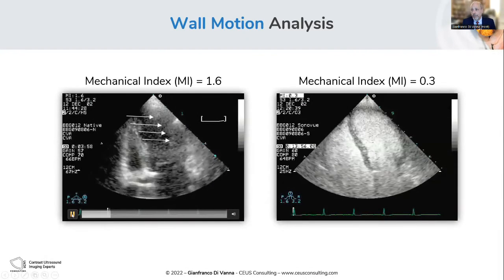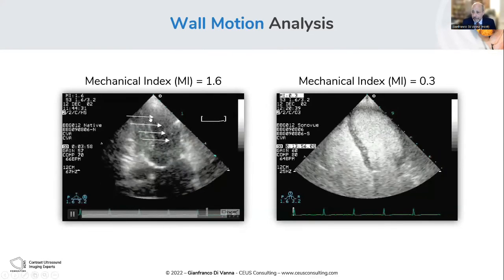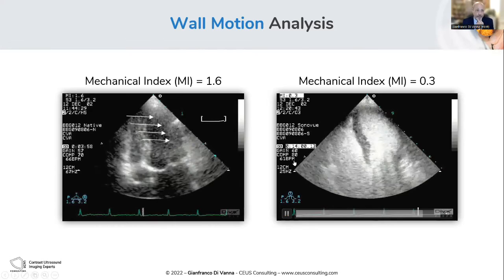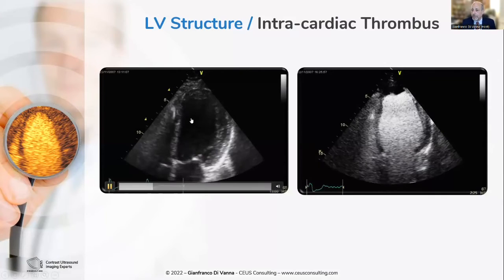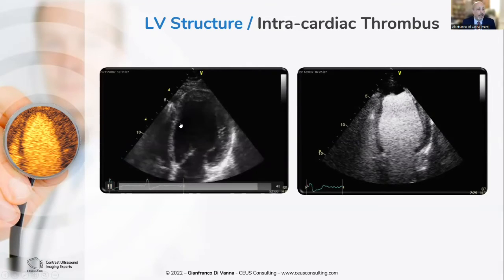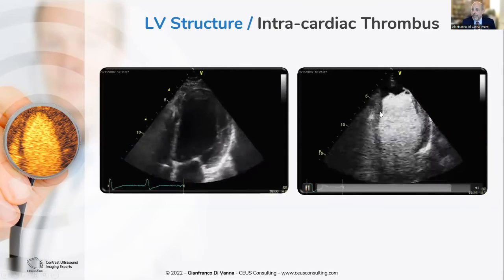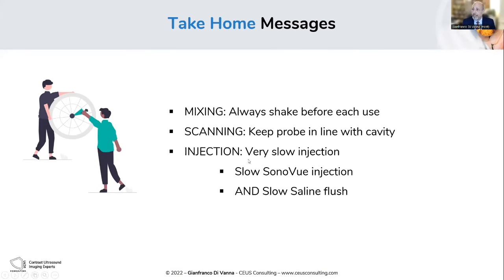For wall motion abnormalities, look at this wall — it is very difficult to identify the limits and to assess movement on baseline, whereas with contrast you see a very clear difference. Same for thrombus: Alexandros showed some cases where on baseline it is difficult to see, since the ultrasound beam passes liquids, air, and everything and gets attenuated. In contrast mode, the machine is tuned to the bubbles reflecting back, and that is why you get the best enhancement.